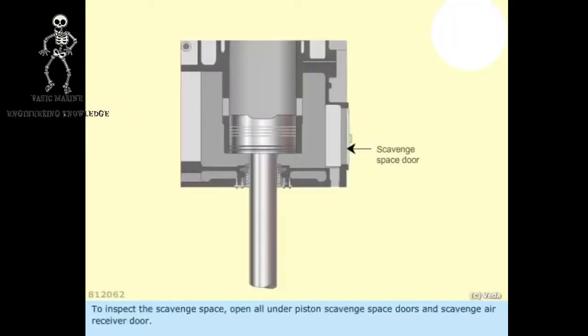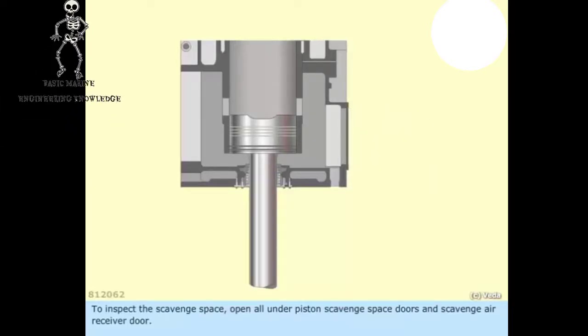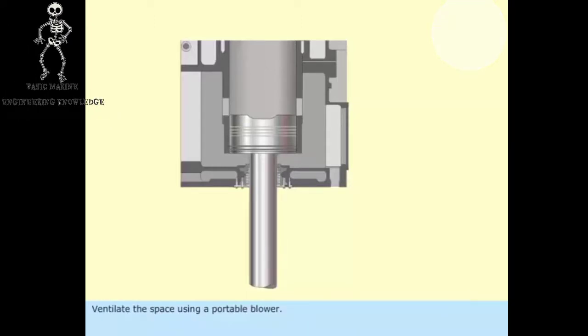To inspect the scavenge space, open all under-piston scavenge space doors and scavenge air receiver door. Ventilate the space using a portable blower.